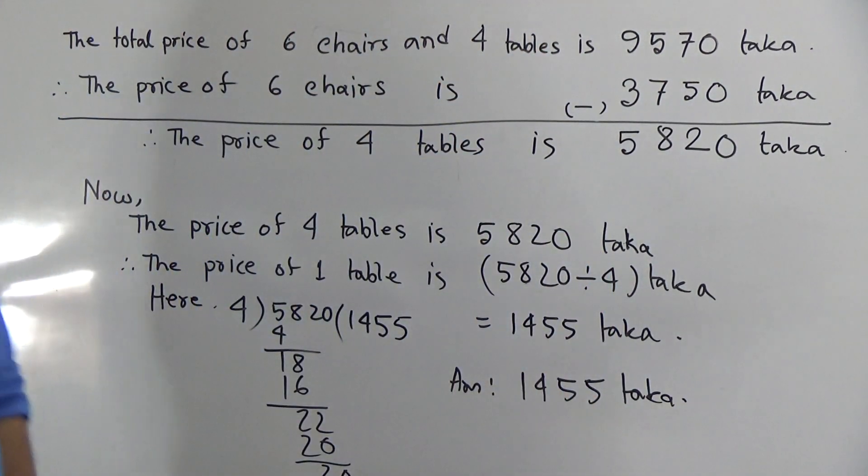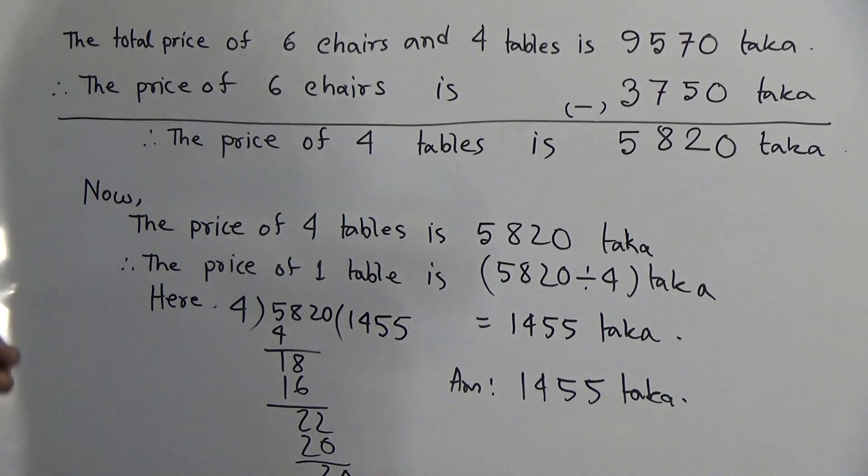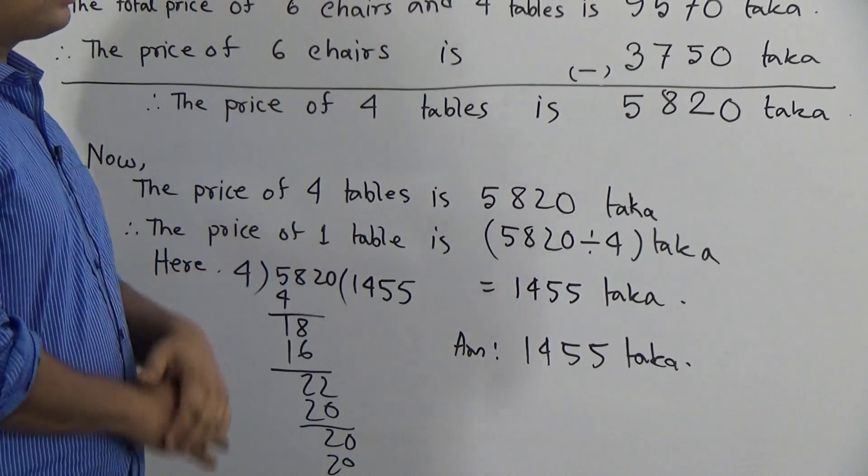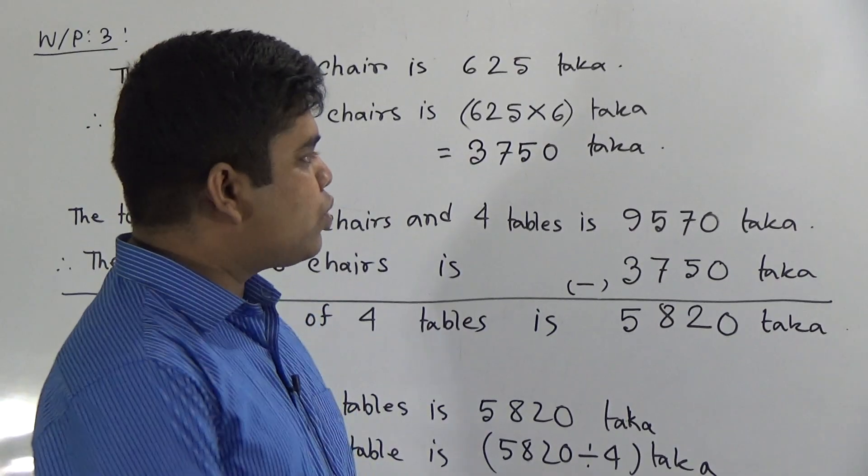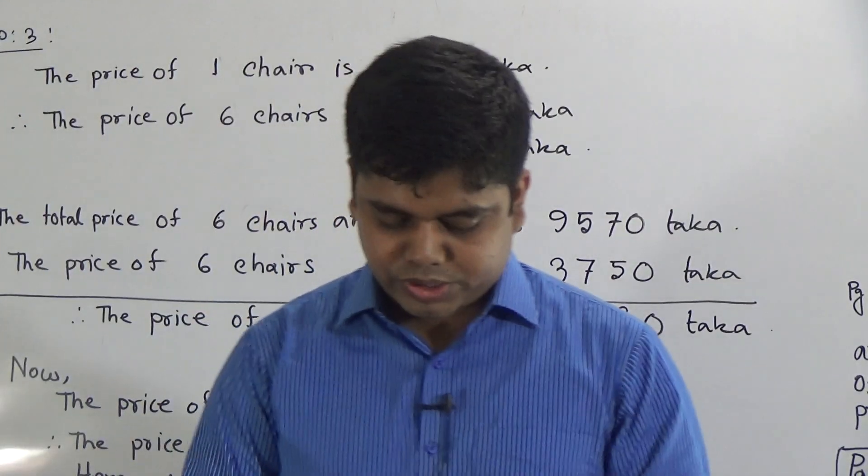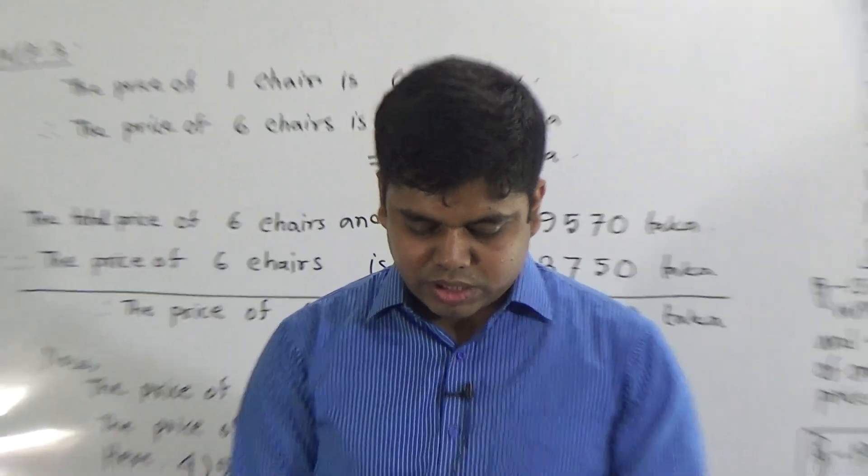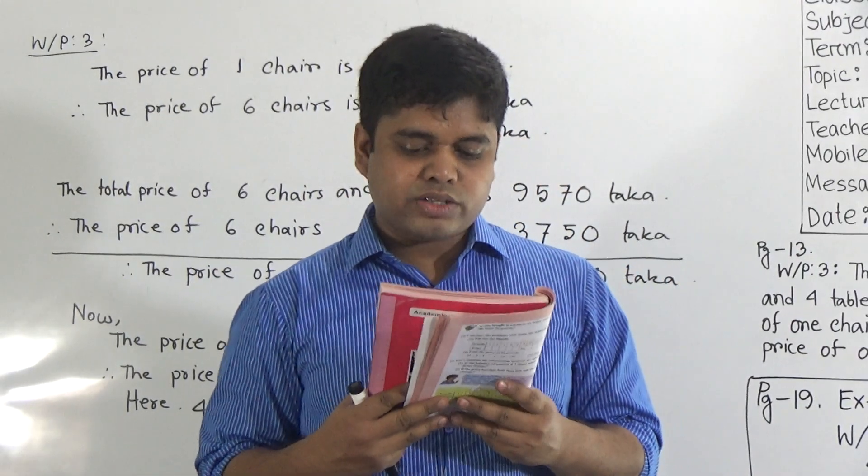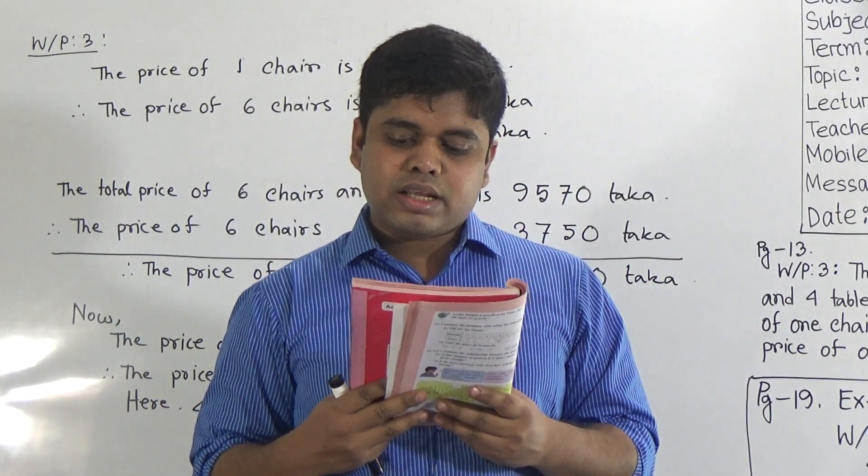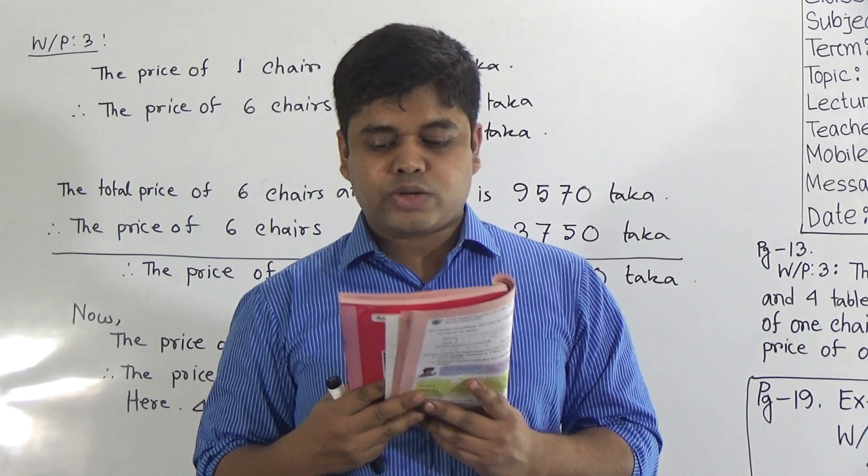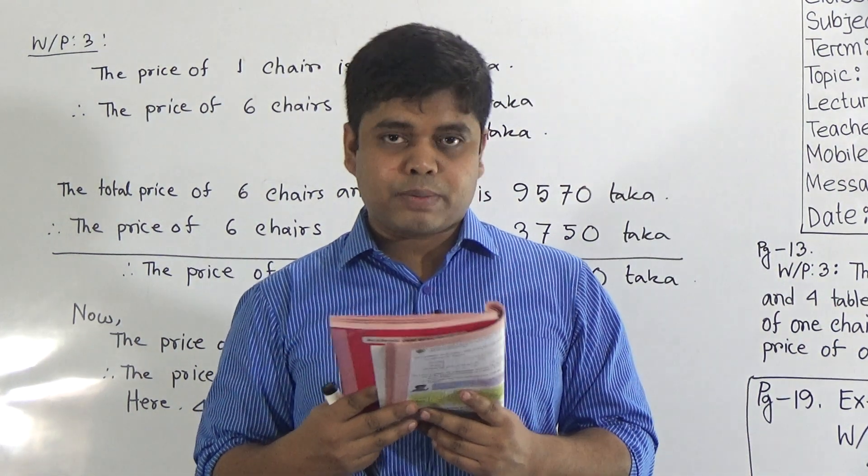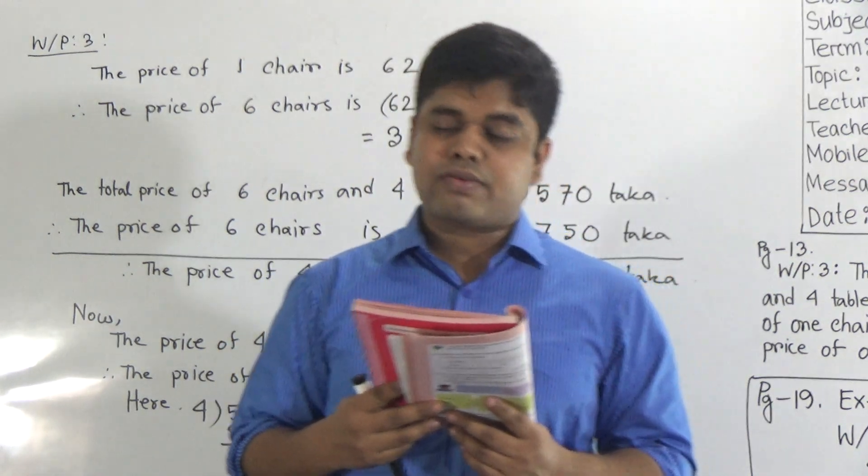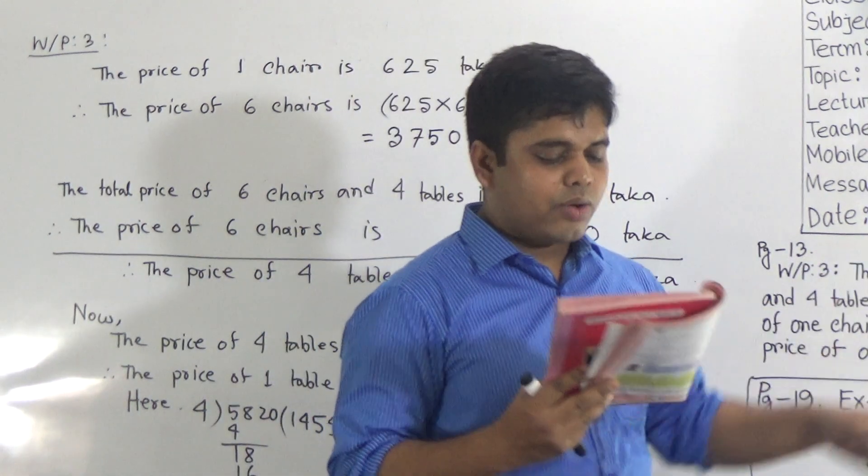Dear students, just like this one, you shall solve from page number 19, questions 2 and 5. I read question number 2: The price of 12 plates and 20 cups total 3920 taka. The price of one cup is 145 taka. What is the price of one plate? Just like this one.